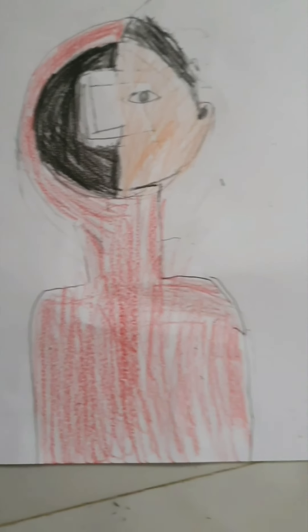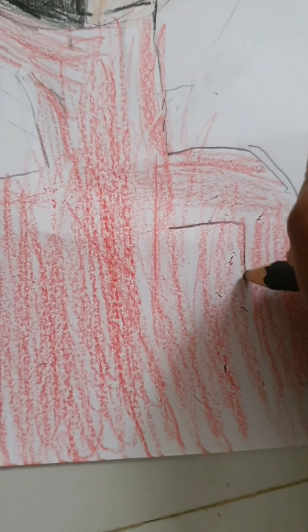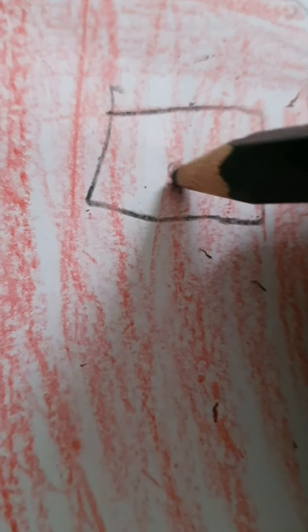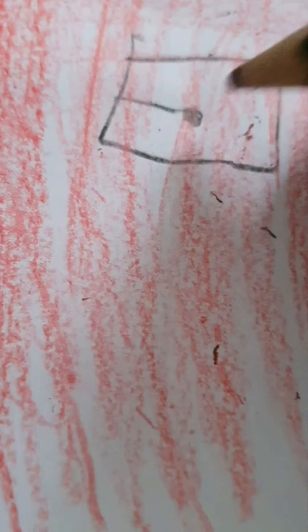So after we finish coloring it, over here we just need to draw just like a rectangle. And we put the dot like this. And we just finish it.